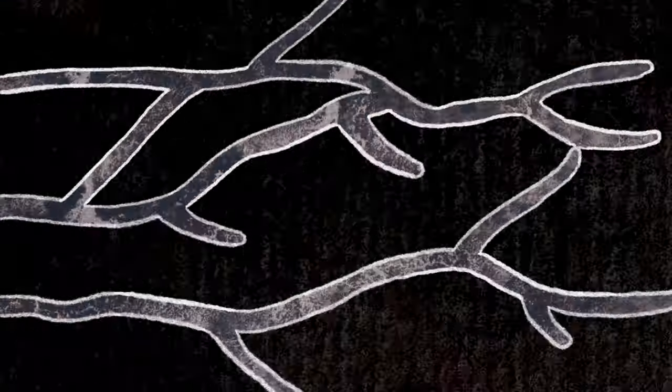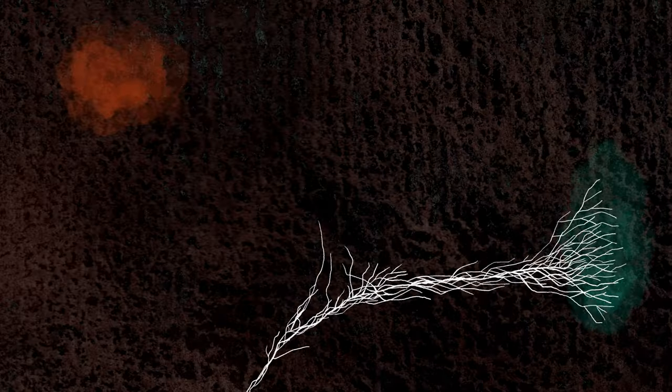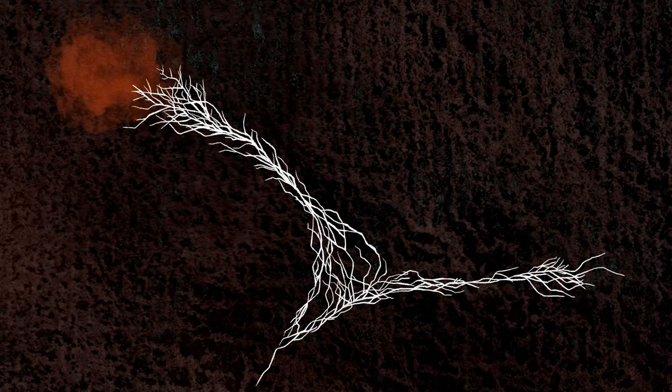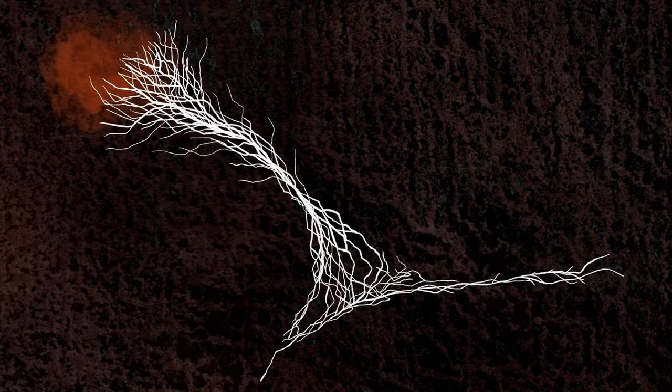Fungi. Fungi are largely invisible ecosystem engineers which live as networks of tubular cells called mycelium. Mycelial networks have no fixed shape. By remodeling themselves, they can expertly forage for nutrients and water from their surroundings.